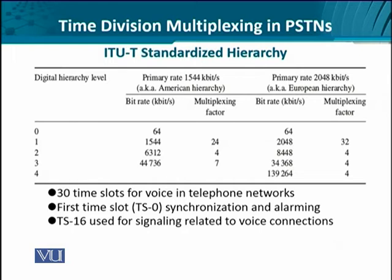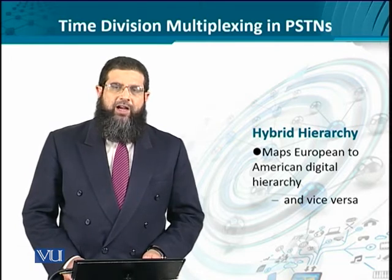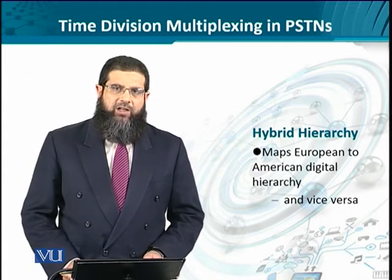Similarly, the American hierarchy grows from level zero to level one with 24 voice channels, creating an effective data rate of 1.544 megabits per second. You can understand the remaining columns by knowing the multiplexing factor and the resultant bit rate. This ITU-T hierarchy is predominantly European but does also consider the American digital hierarchy.